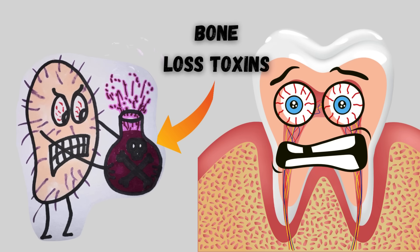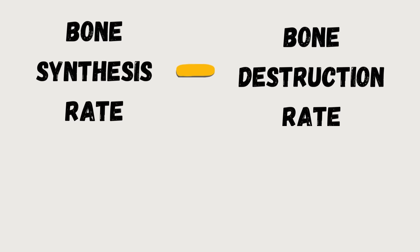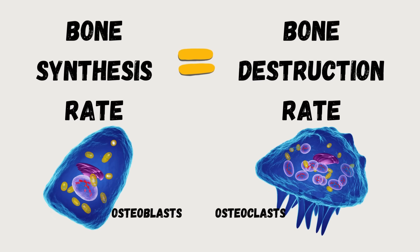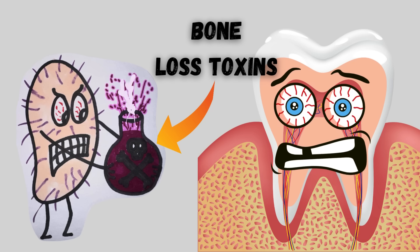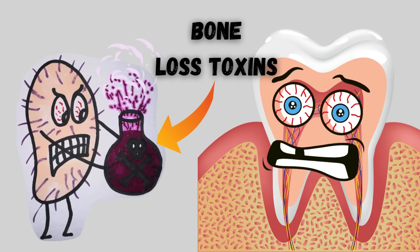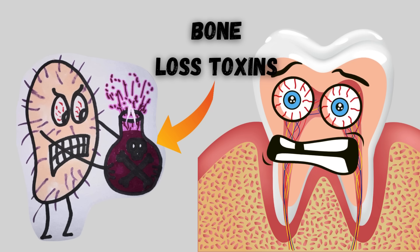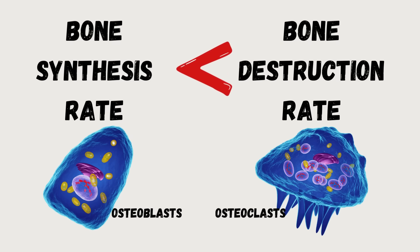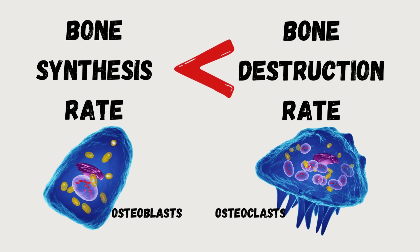The anaerobic bacteria secrete toxic substances that end up destroying the gum and bone tissue. For a healthy individual, bone synthesis cells and bone breakdown cells work at the same rate to stay in balance. However, the toxic substances from anaerobic bacteria cause the bone breakdown cells to work more rapidly than the bone synthesis cells, leading to bone loss and finally loosening of the teeth.